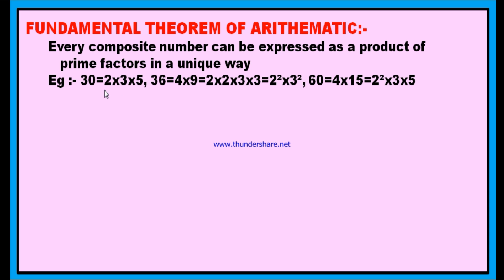You see, you can write 30 as the product of 3 prime numbers. 2 is a prime number, 3 is a prime number, and 5 is a prime number. You can write 30 only in this way, and you cannot write 30 in any other way as the product of prime numbers only. Of course, you can write 30 as 6 into 5, but 6 is not a prime number. Therefore, you can write 30 as the product of prime numbers in only one way, and there is no other way.